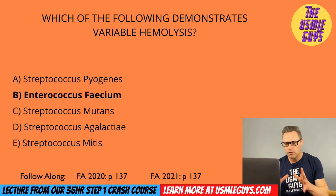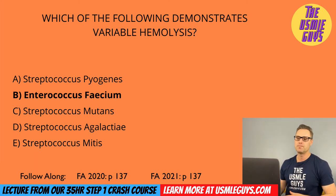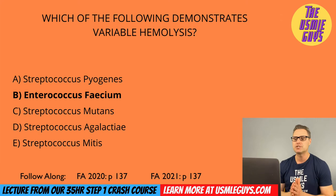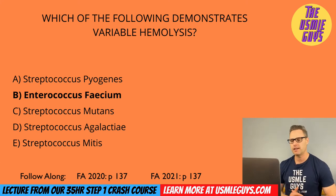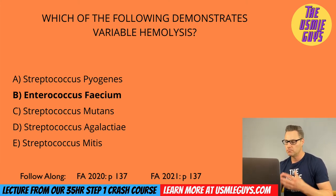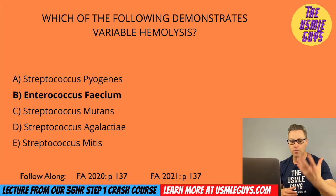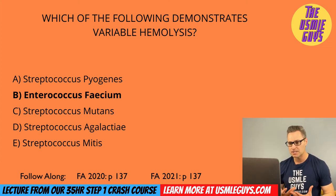The correct answer here is B. Enterococci include Enterococcus faecalis and Enterococcus faecium. These are normal flora of the colon and can cause biliary tract infections, subacute endocarditis, and UTIs. Be on the lookout for these as a cause after a GI or GU procedure. They are penicillin G resistant, and some can be vancomycin resistant, making them likely to cause nosocomial infections. Importantly, enterococcus species can grow in 6.5% sodium chloride, making them more resilient than their Strep bovis counterparts.